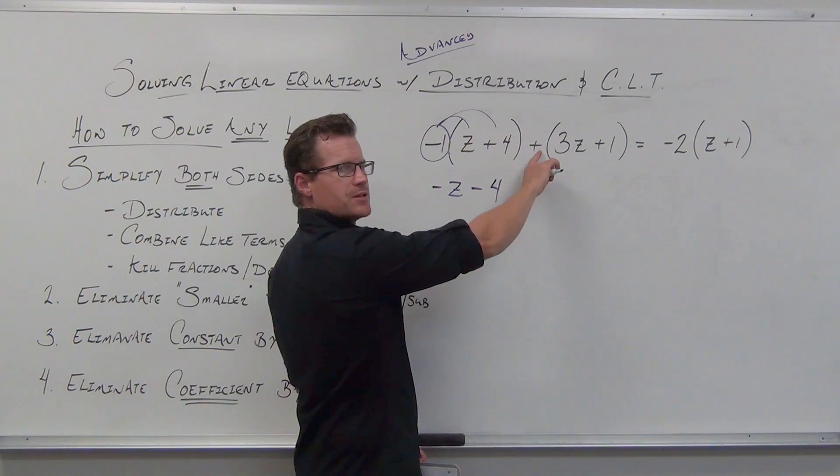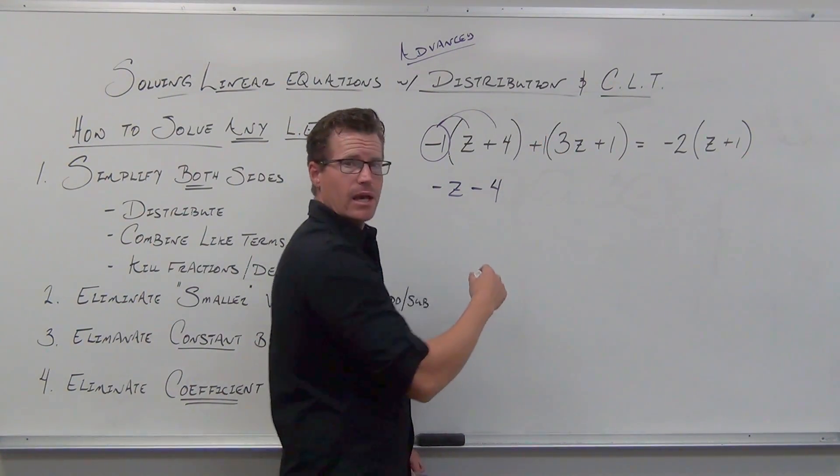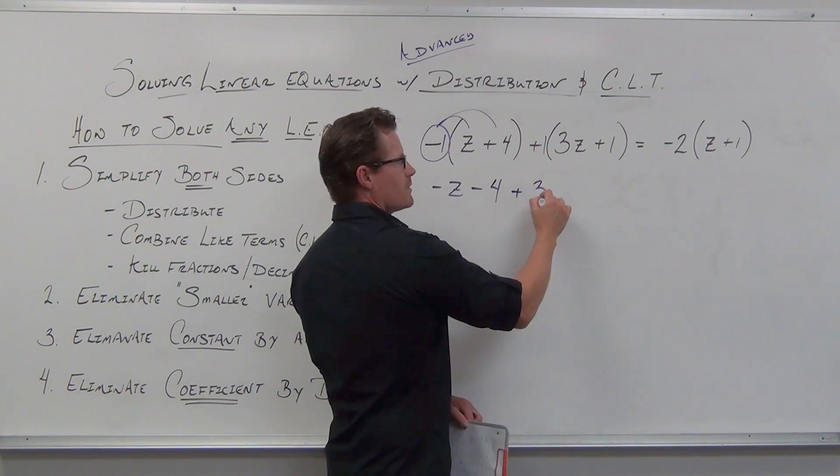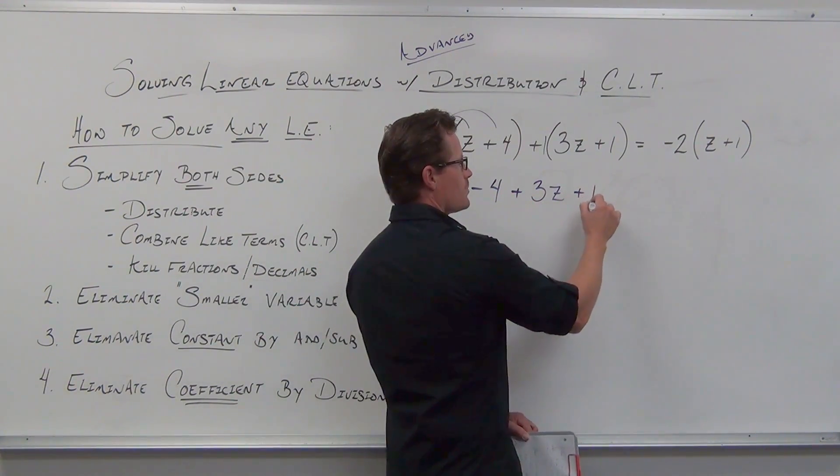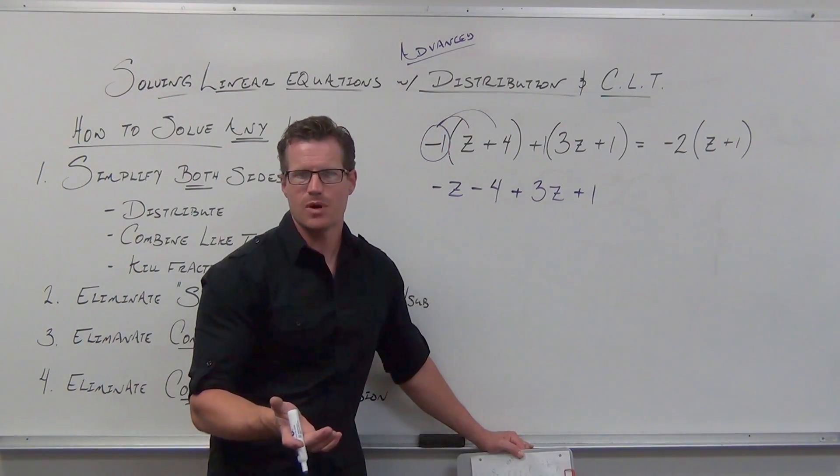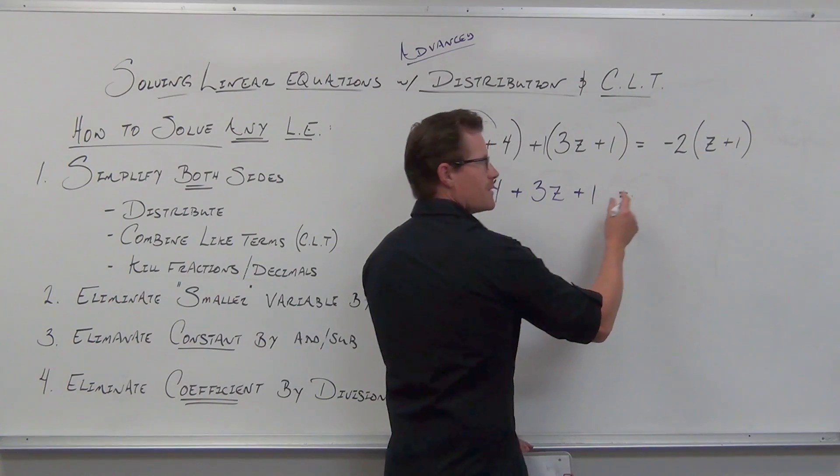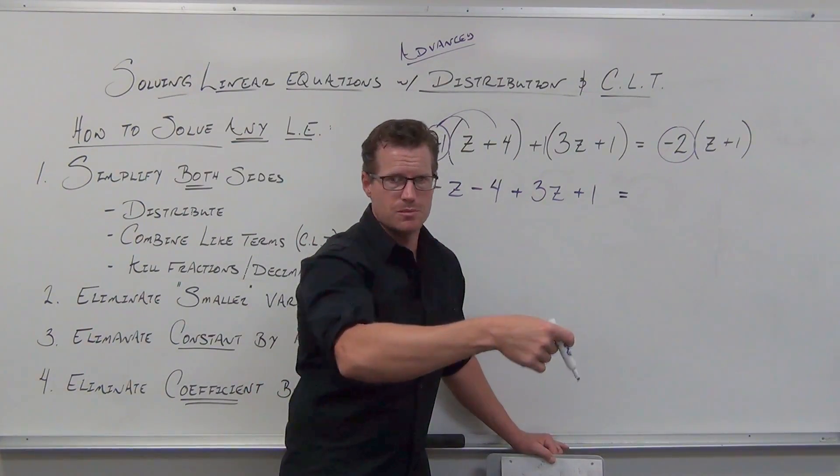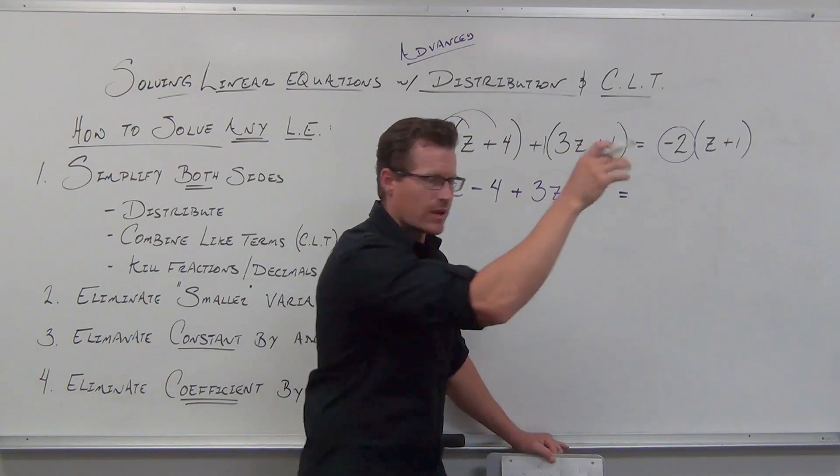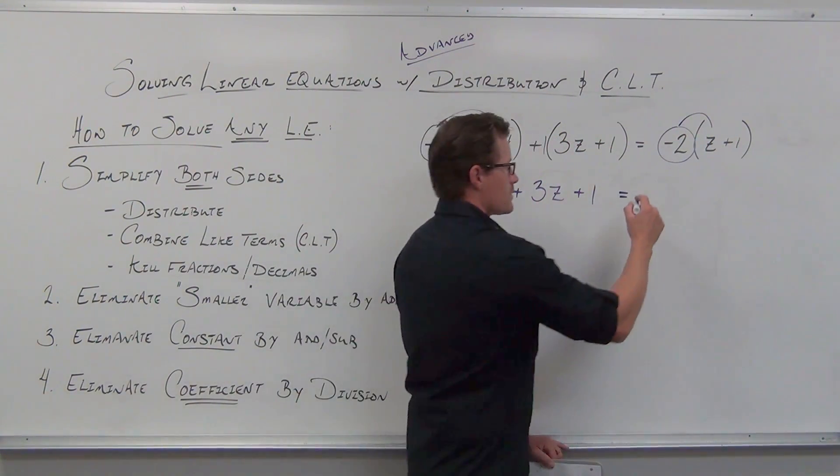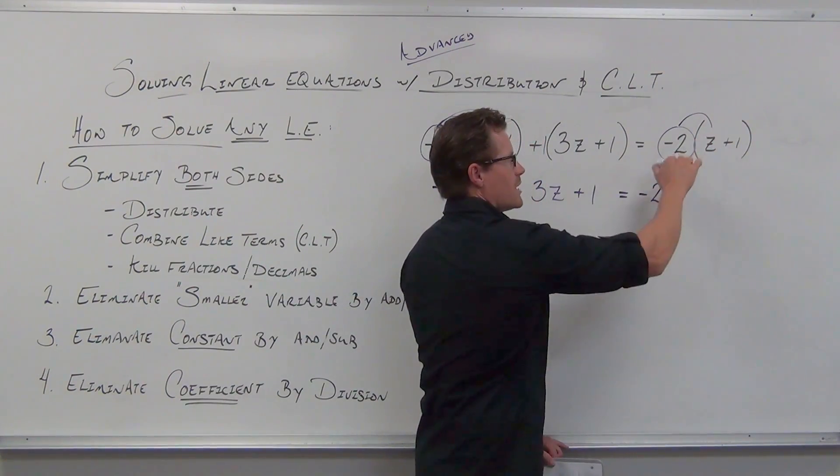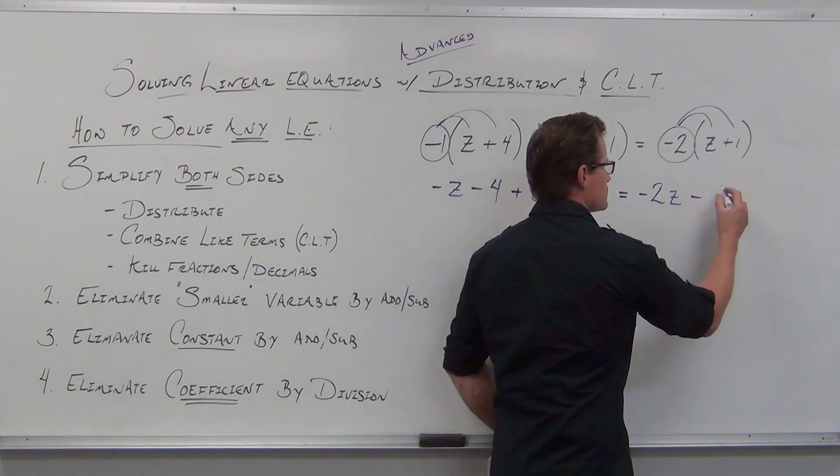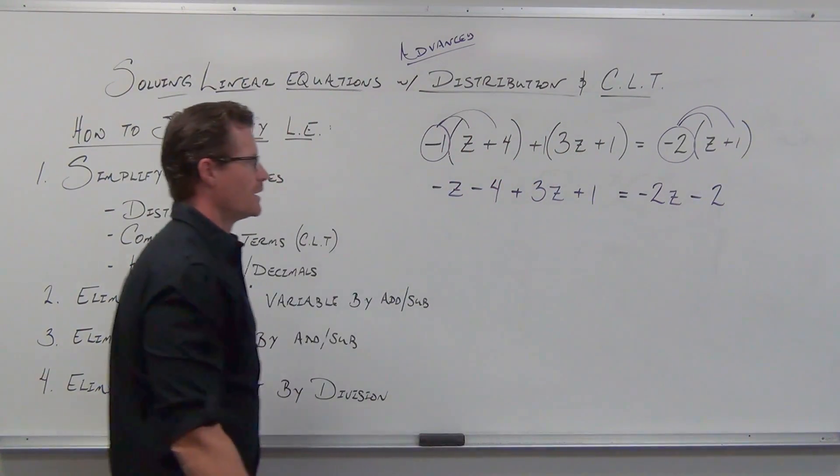After that, there's nothing to distribute here. If you want to distribute a positive one, I guess you can, but it's not going to change anything. That was just holding this expression together. On the right-hand side, I'm going to keep going with distribution. I'll circle my number in front of my parentheses with my sign. Then we're going to distribute through multiplication to every term. Negative two times positive z is negative two z. Negative two times positive one is negative two. You said negative, but write down a minus.